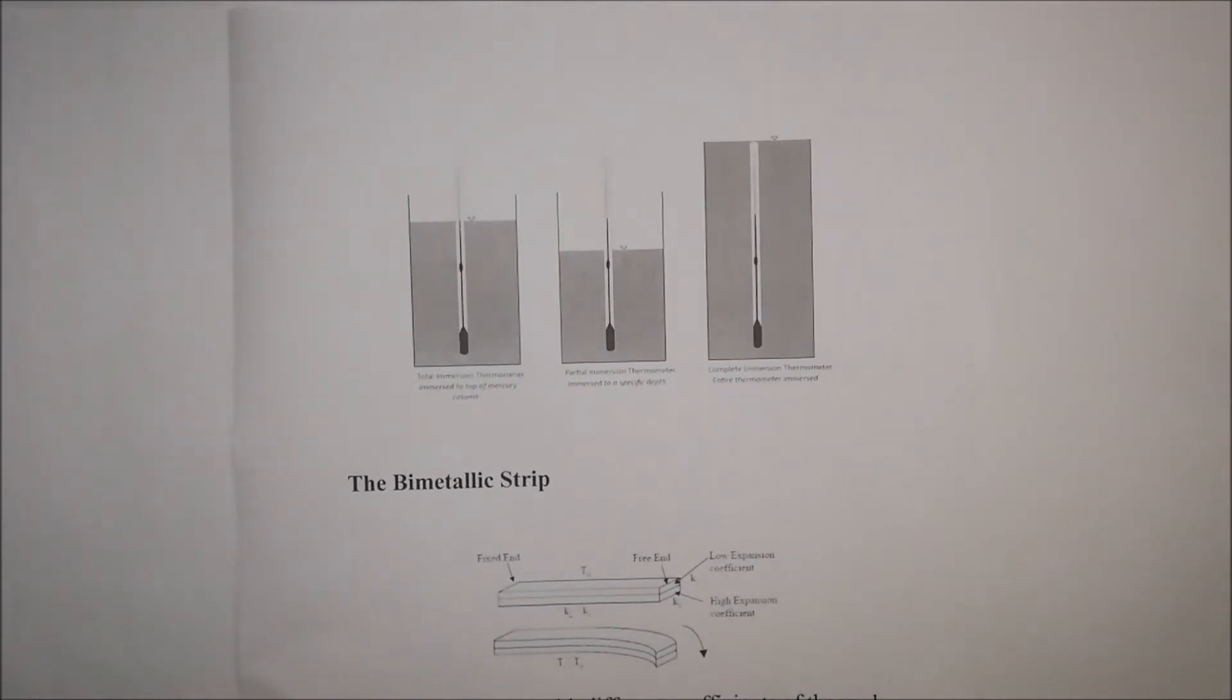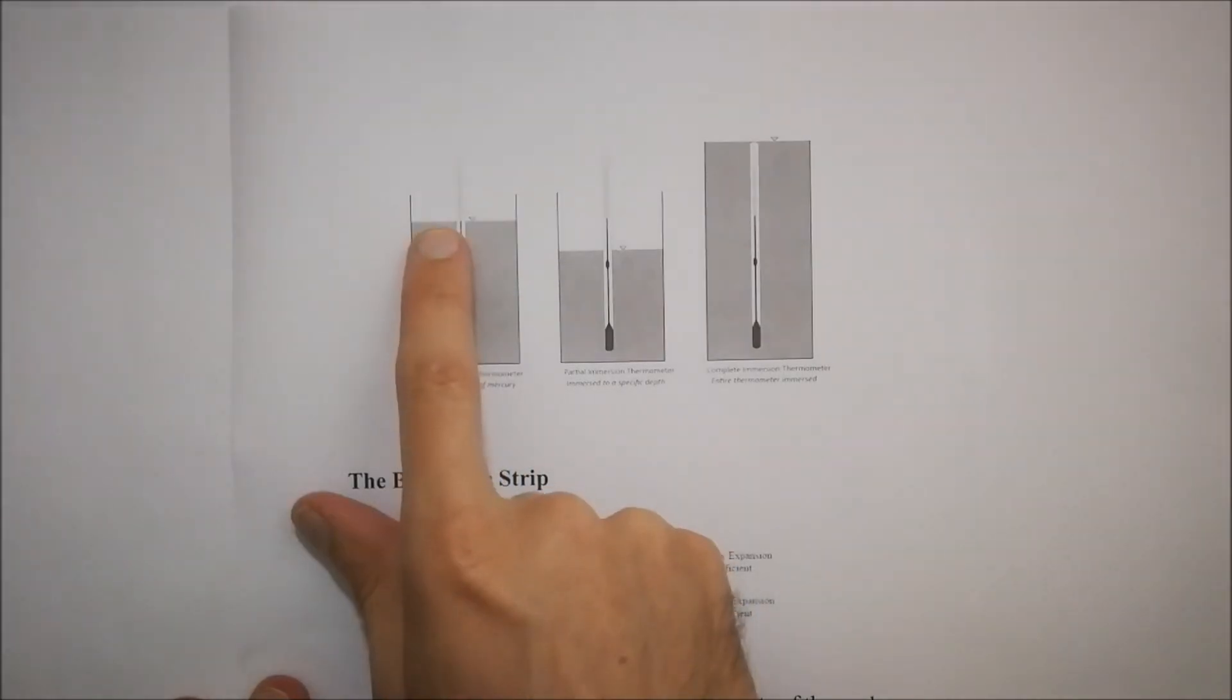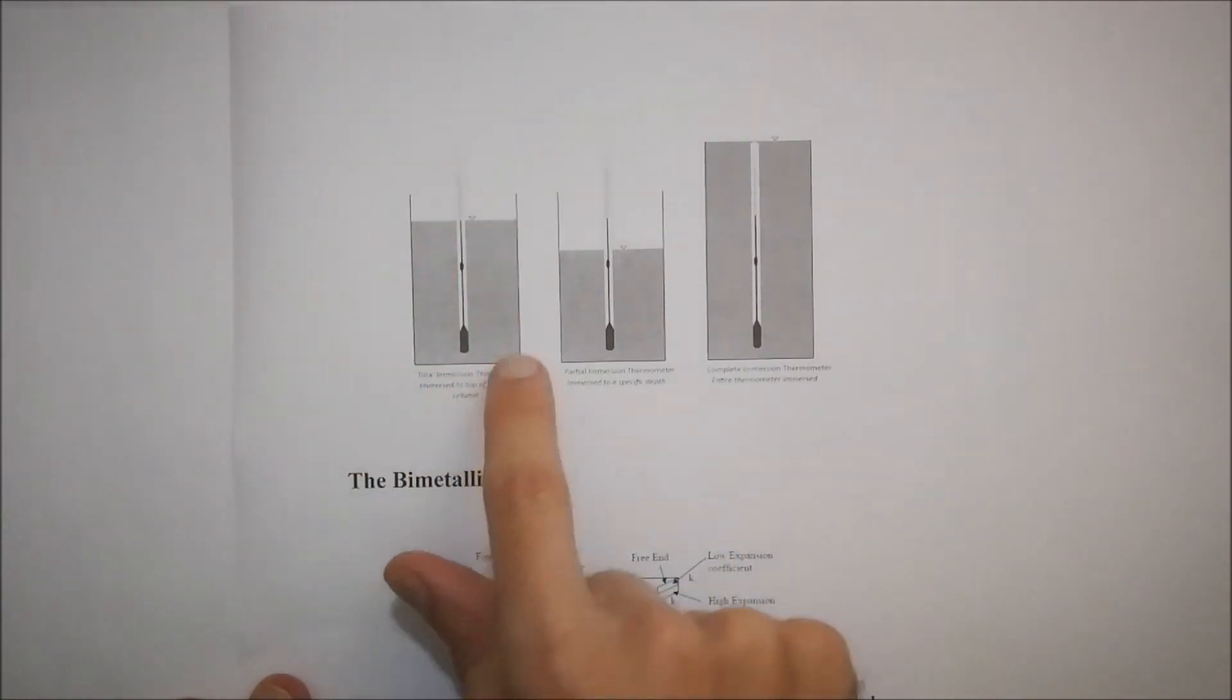You'll see that there's three different configurations that you can have with these thermometers. The first one is a total immersion thermometer. If you have a look at that, you will see that where the level is that it rises up to, that is immersed by the liquid in the specific bulb.